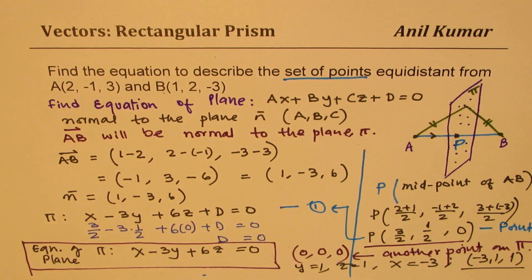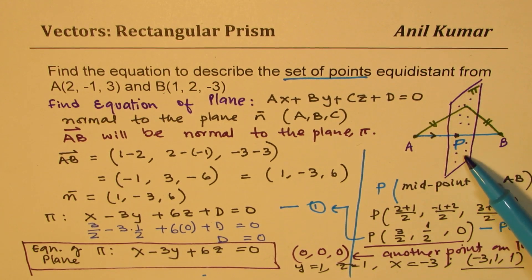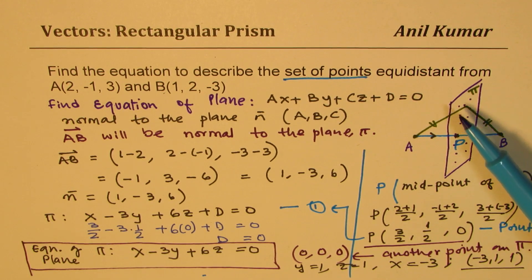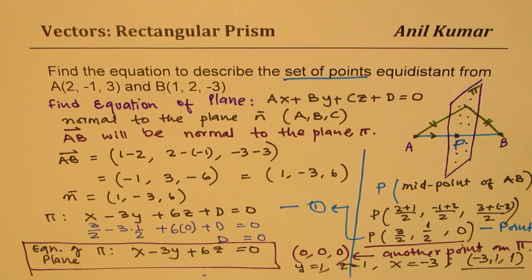I hope you understand the concept. The equation describes a plane which is the perpendicular bisector of line AB. That plane contains infinite points, and their coordinates satisfy the equation X − 3Y + 6Z = 0. To find more points, place values for Y and Z and calculate X. Feel free to write comments, share your views, and if you like and subscribe to my videos, that would be great. Thanks for watching and all the best.